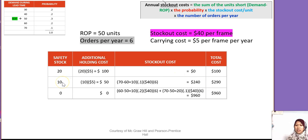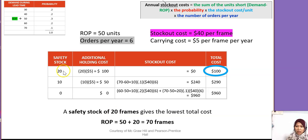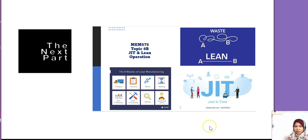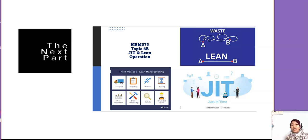We now have three options. The best option is safety stock of 20 frames, which gives the lowest total cost of 100 ringgit. The new ROP becomes 50 + 20 = 70 frames. That concludes the quantity discount model and the ROP with probabilistic safety stock model. The next part will cover JIT and operations.